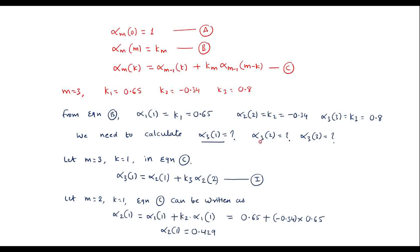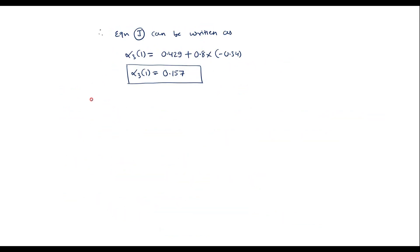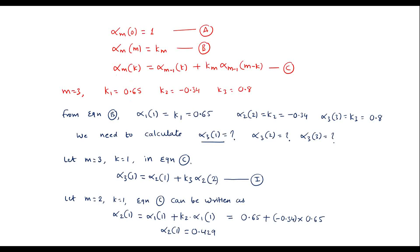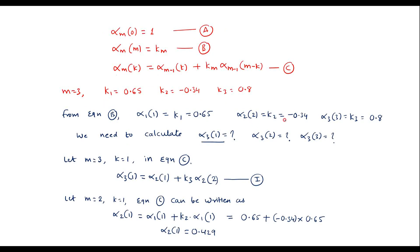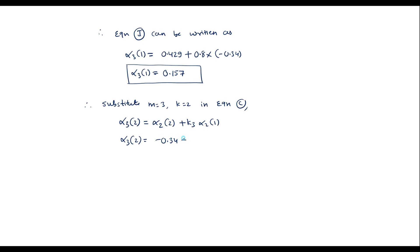α_3(2) is obtained by substituting m equal to 3 and k equal to 2 in equation (c), giving α_3(2) equal to α_2(2) plus k3 times α_2(1) equal to minus 0.34 plus 0.8 times 0.429. Therefore, α_3(2) equal to 0.0032.